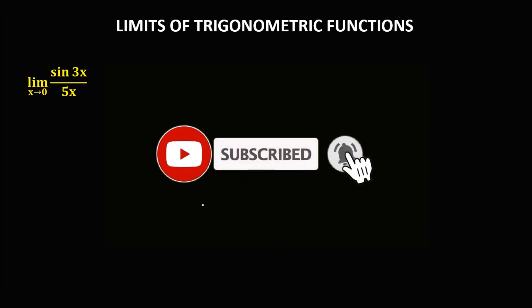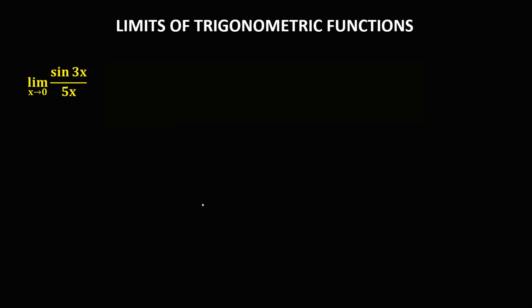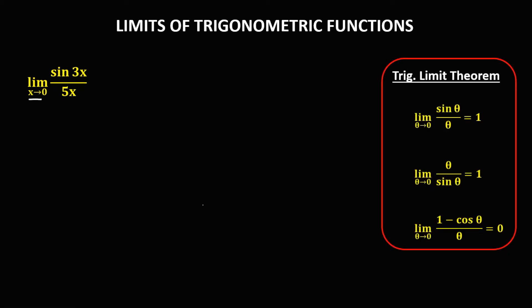Welcome to MathStorya. Today's topic is finding the limits of trigonometric functions. From the trigonometric limit theorem: the limit of sine θ over θ as θ approaches 0 equals 1; the limit of θ over sine θ as θ approaches 0 also equals 1; and the limit of 1 minus cosine θ over θ as θ approaches 0 equals 0.